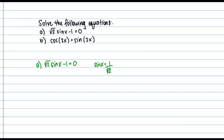I'm going to rewrite this 1 over root 2 so that it's a more familiar value. The way I'm going to do that is by a process called rationalizing the denominator, which means multiplying top and bottom by root 2 over 2. By doing this, I'm multiplying by 1 so I'm not actually changing the expression — I'm just rewriting it. So if I follow through with this, I get sine of X equals root 2 over 2. Hopefully you recognize that value from the unit circle.